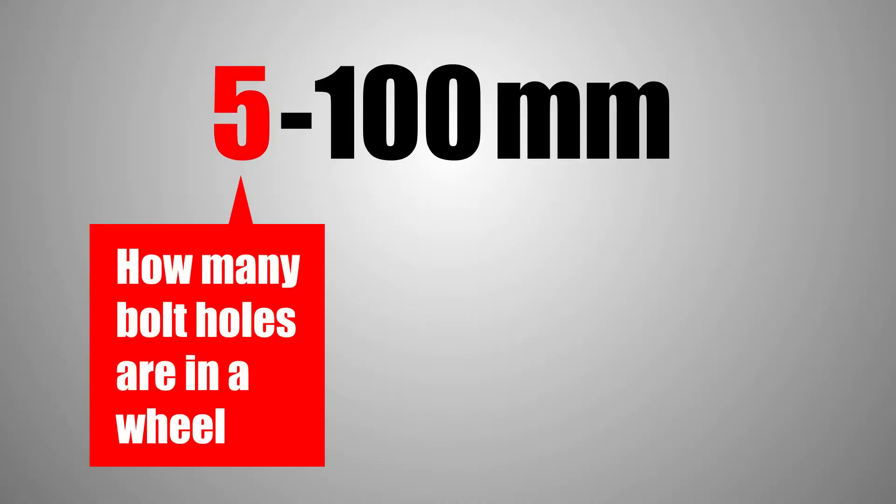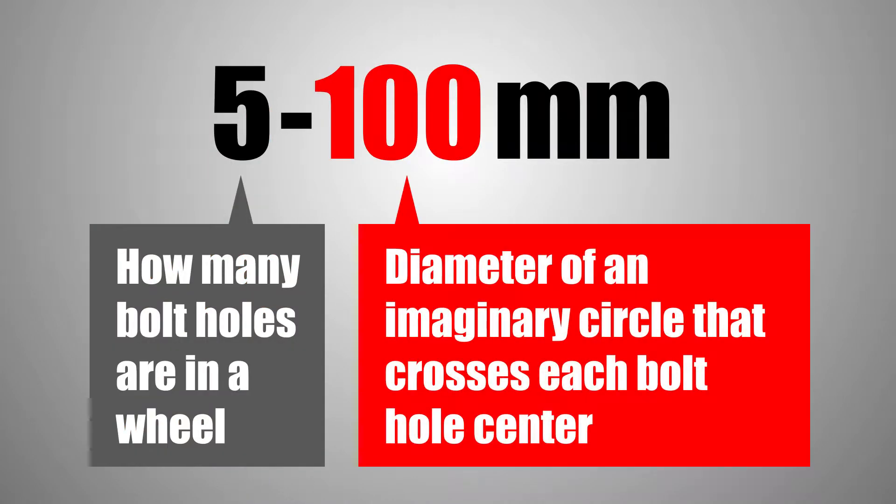Bolt patterns are measured using a two number system. The first number indicates how many bolt holes are in a wheel. The second is the diameter of an imaginary circle that crosses each bolt hole center.